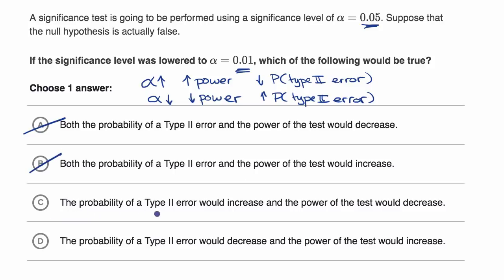Choice C, the probability of a type two error would increase. That's consistent with what we have here. And the power of the test would decrease. Yep, that's consistent with what we have here. So that looks good.